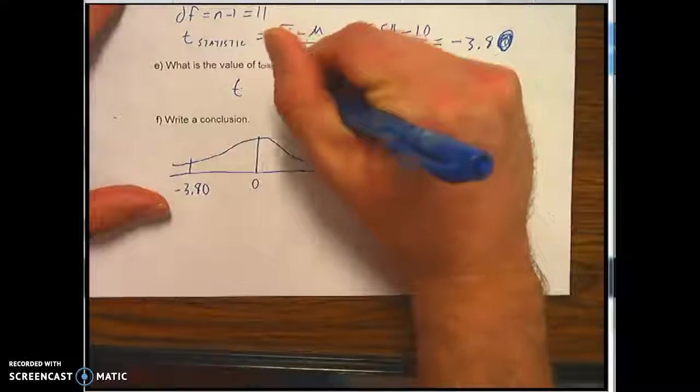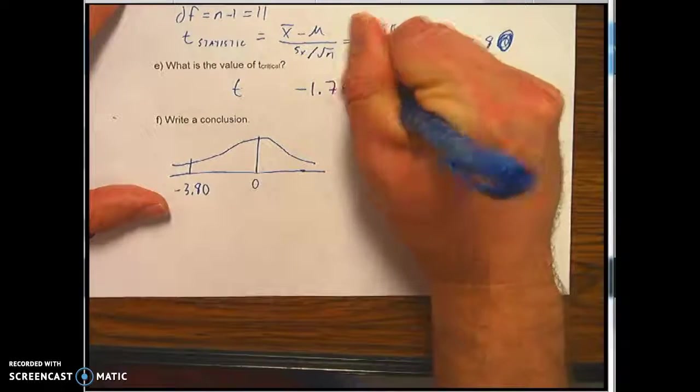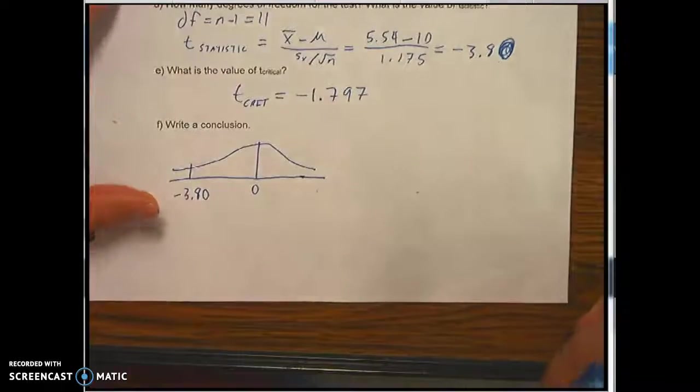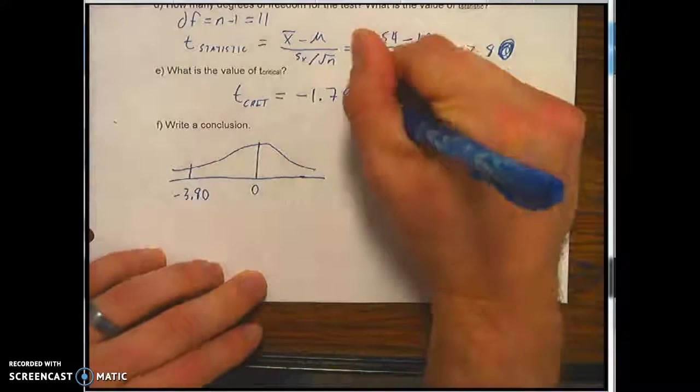Now I want to change that to negative 1.796. So our critical t value is negative 1.796.